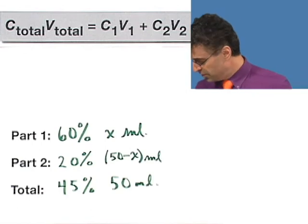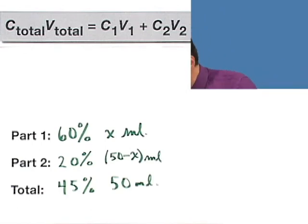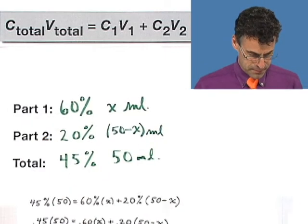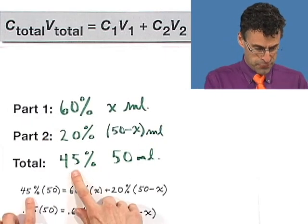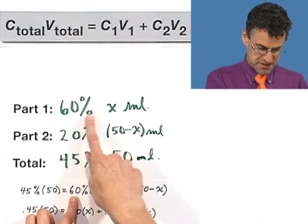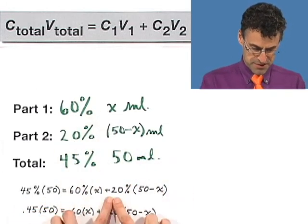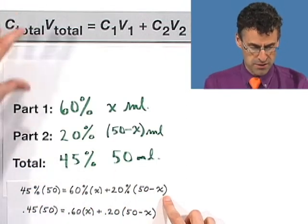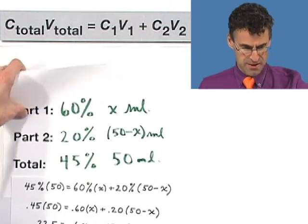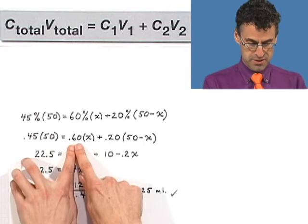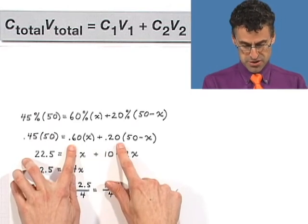And when you put them into the model, what do you see? Well, this is like one of those cooking shows where I've done it for you in advance. I've got 45% times the volume equals 60% times the x plus the 20% times the 50 minus x. So that's how I use this model and this data. And now it's just a matter of solving. So, you know, 45% is 0.45, 60% is 0.6, 20% is 0.2.